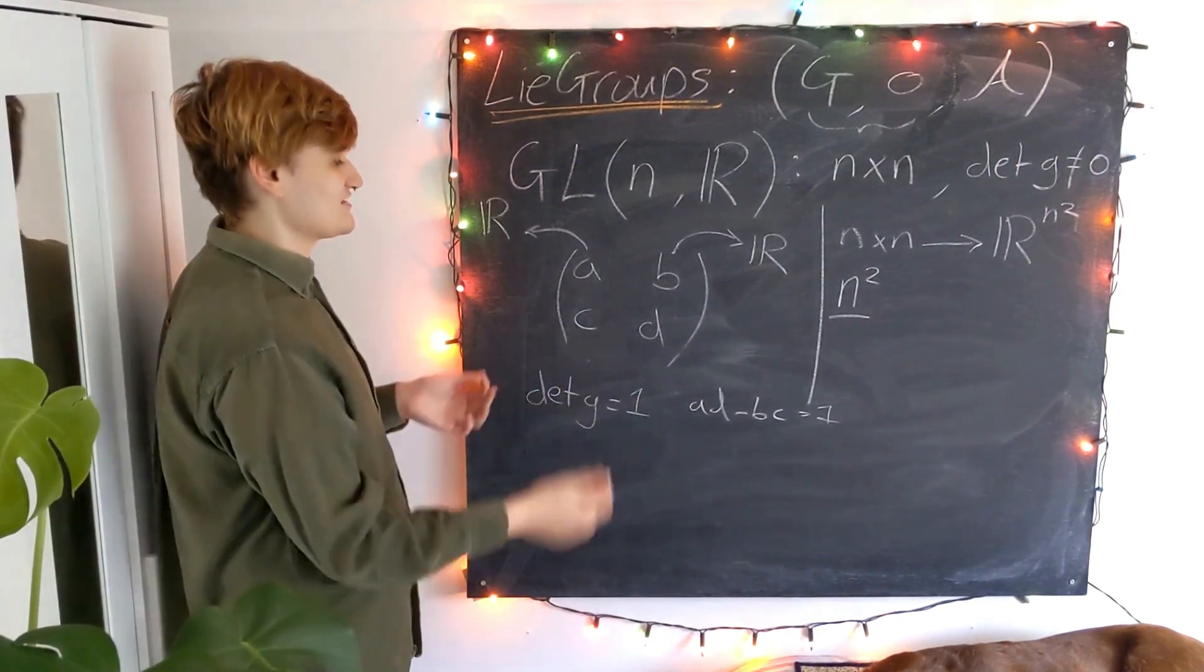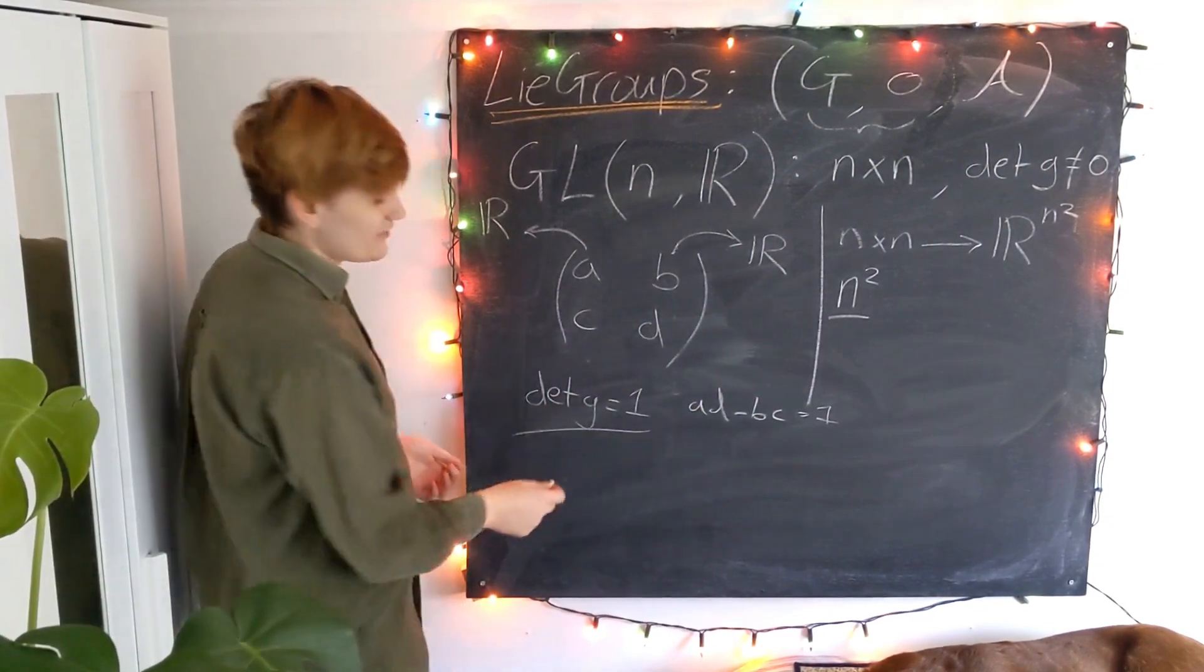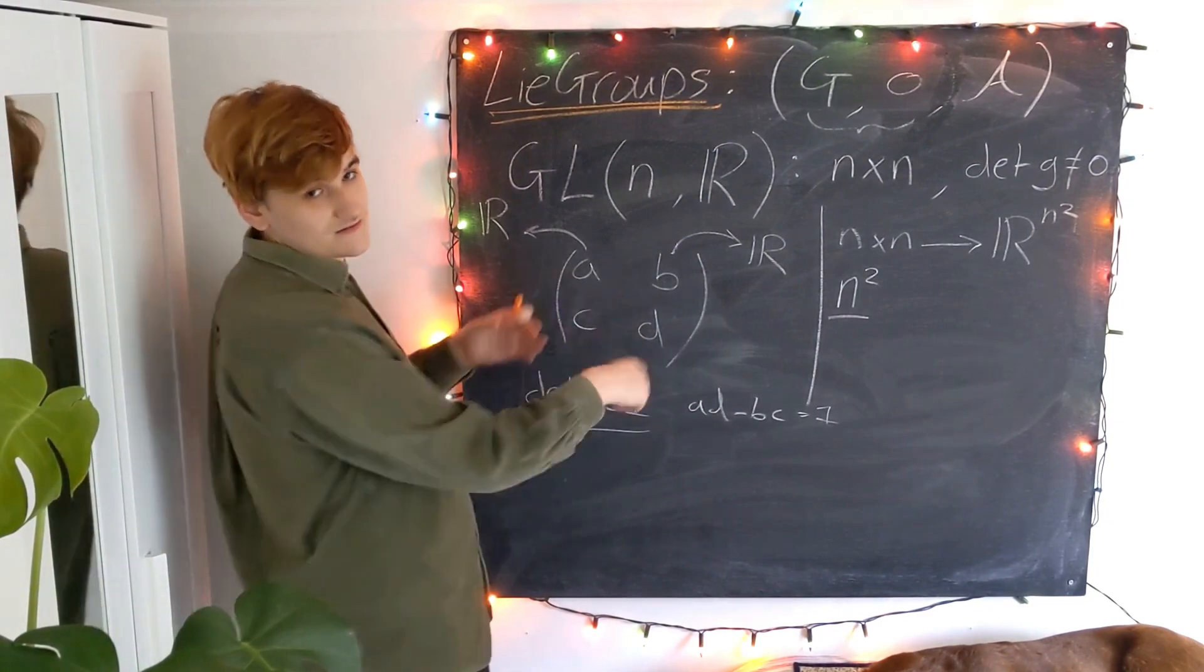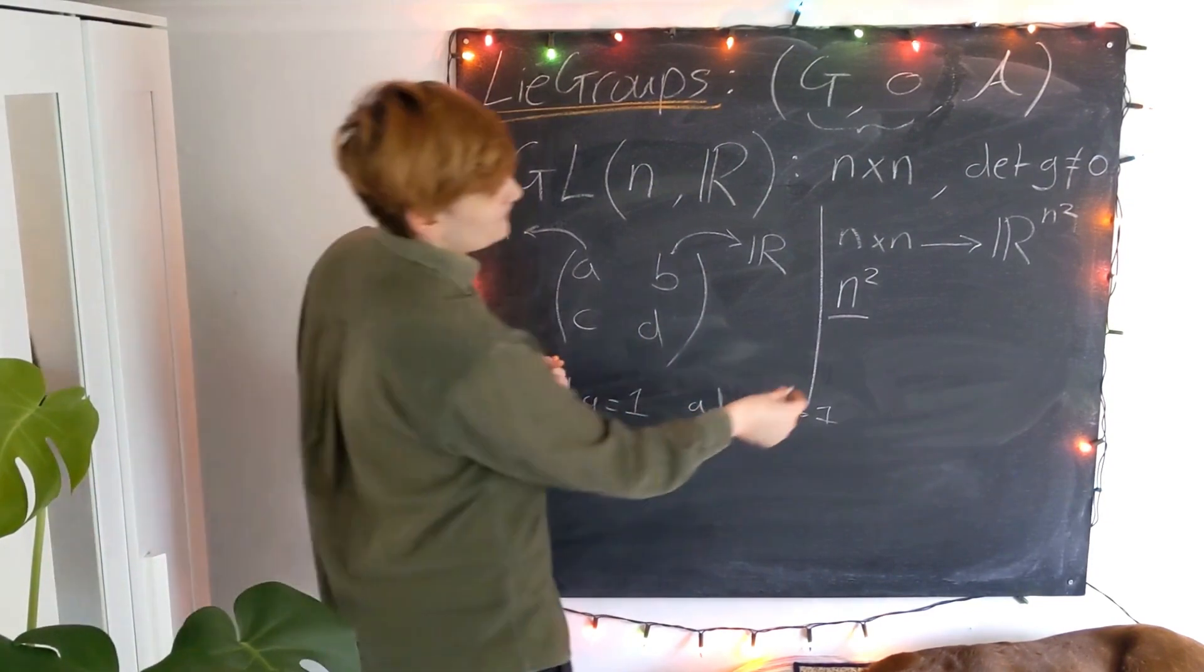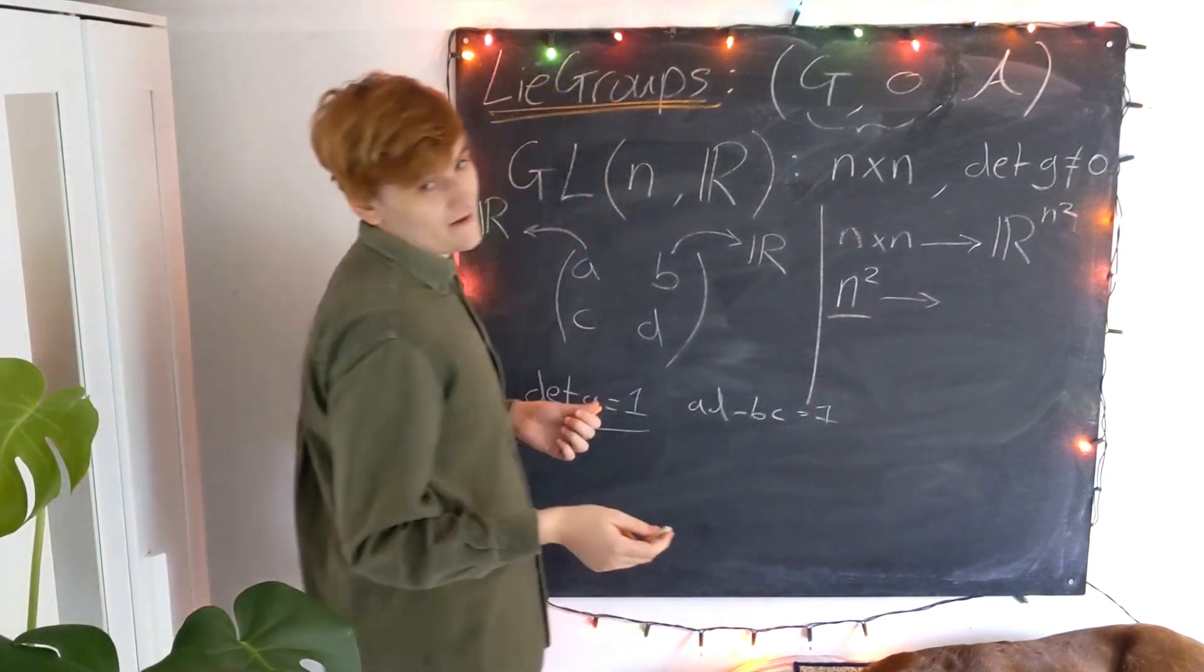But now as we move forward, we're going to see how adding extra structure, like for example, imposing a unit determinant is going to fix some of the coordinates in relation to the others. And we're going to reduce the number of free parameters to some number that's less than N squared.